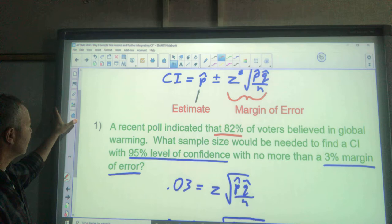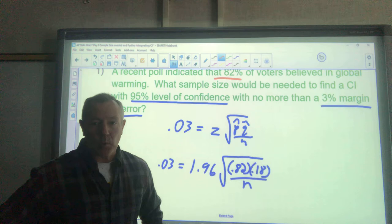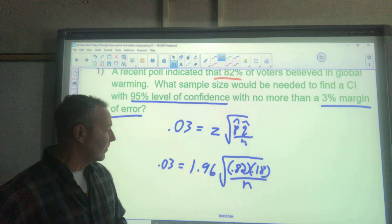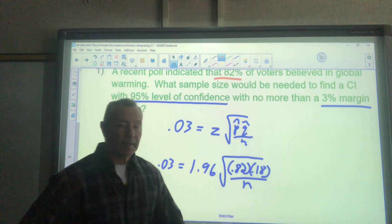Okay, so with that in mind, 1.96 is the z-score for a 95% confidence interval—that could be found on inverse norm if you forget that. And then I have my 0.82 times 0.18. It equals 0.03, and n is the value that I'm looking for.